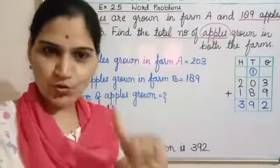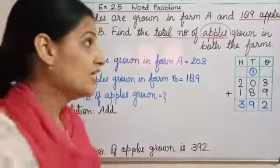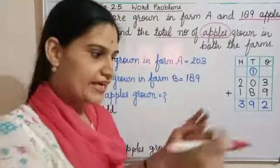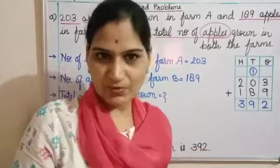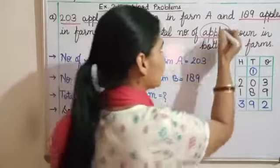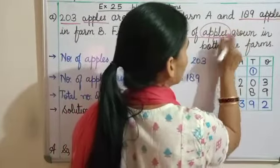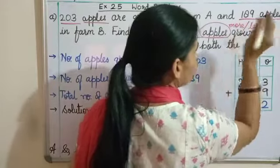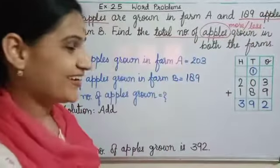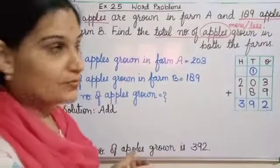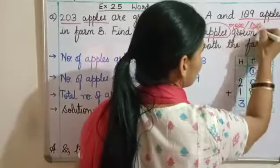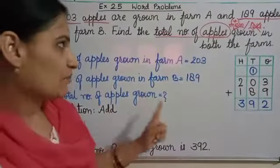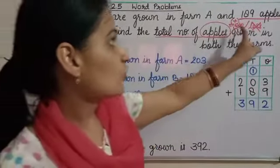Find the total number of apples grown in both the farms. Ab apne aap ko question poochna hai: jo humne circle kiya hai — apples — will it be more or less? Ek farm mein bhi ughe hain, B farm mein bhi ughe hain. Total kya ho gaya? More. Toh jo humne circle kiya hai — question item name mein — more ya less? Jab doh jagah apples ugre hain, total apples will be more. Humara answer hai more, not less. Agar more hai toh addition is our solution.